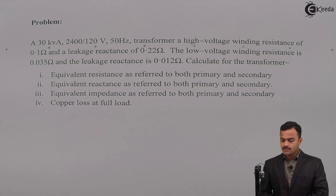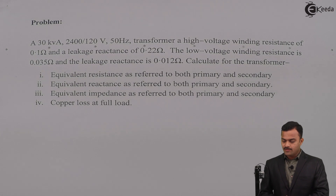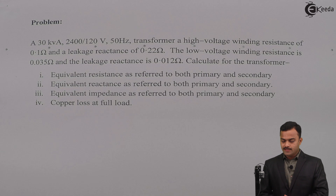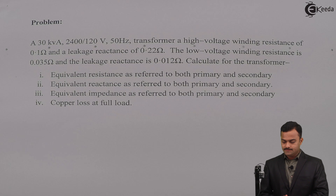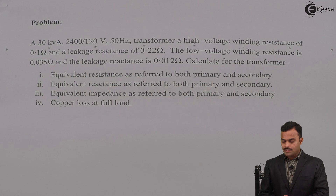Calculate for the transformer: first, equivalent resistance as referred to both primary and secondary; second, equivalent reactance as referred to both primary and secondary; third, equivalent impedance as referred to both primary and secondary; and last, copper loss at full load.